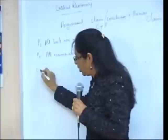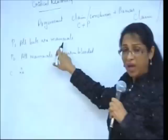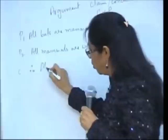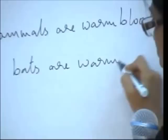Therefore, what would you say about all bats? All bats are mammals — we know that already. So what's the conclusion? They're warm-blooded. Therefore, all bats are warm-blooded. That is the conclusion you have reached.